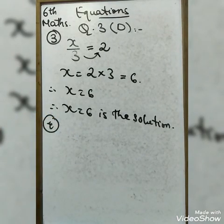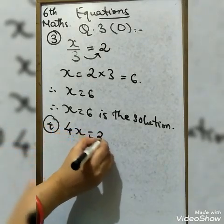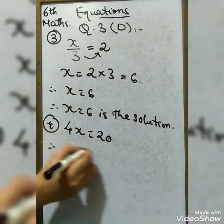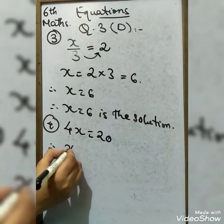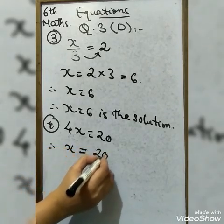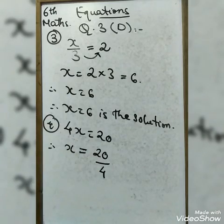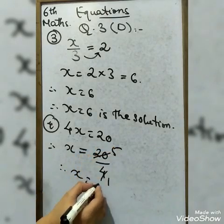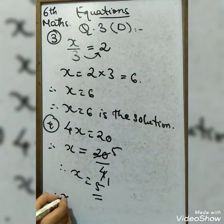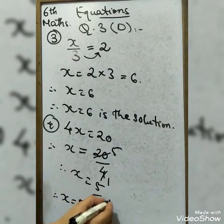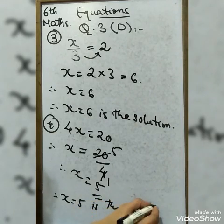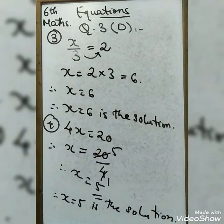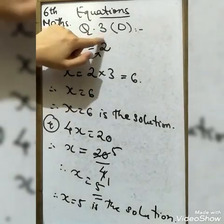Fourth: 4x = 20. Moving 4 to the other side as division: x = 20 ÷ 4 = 5. Therefore x = 5 is the solution. That completes all four questions in question 3D.